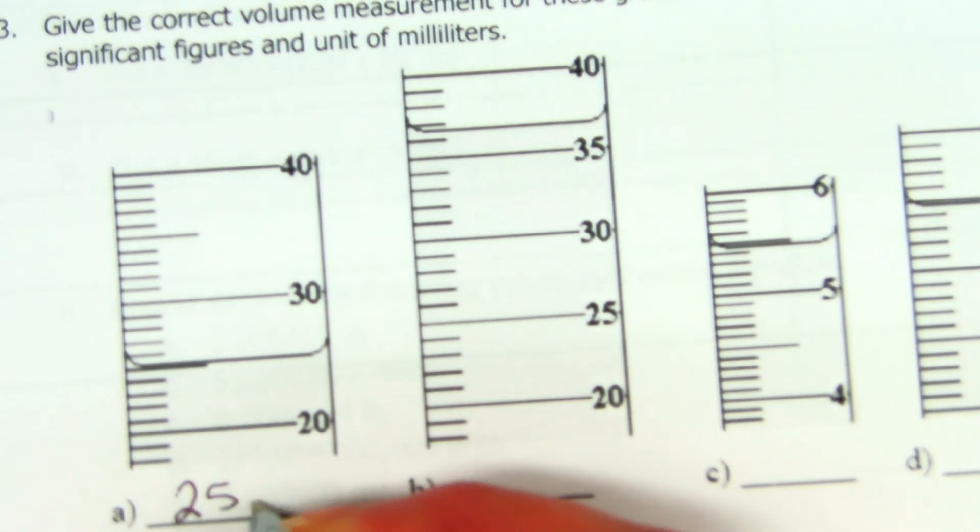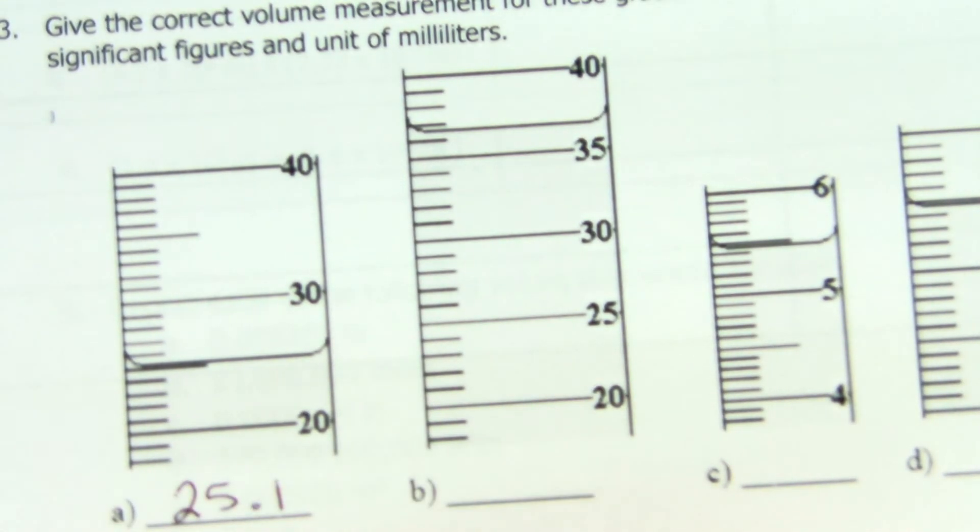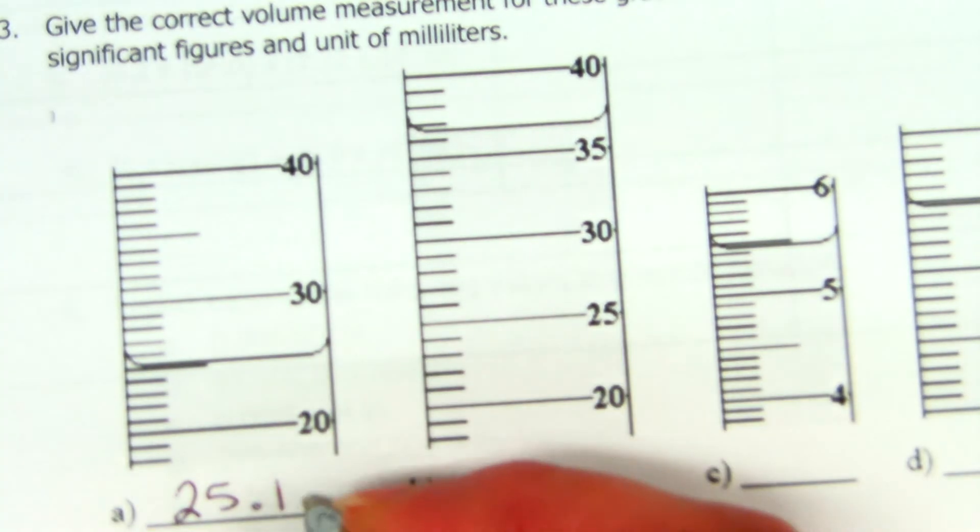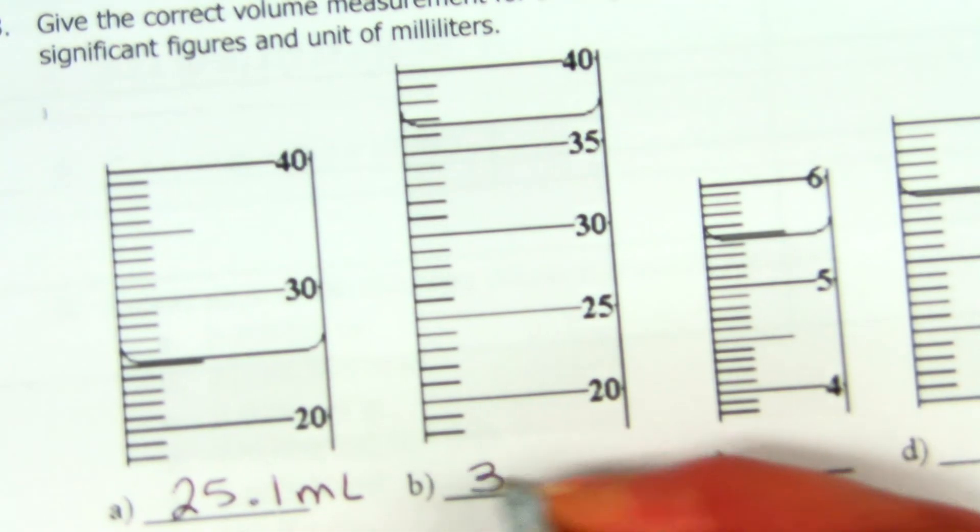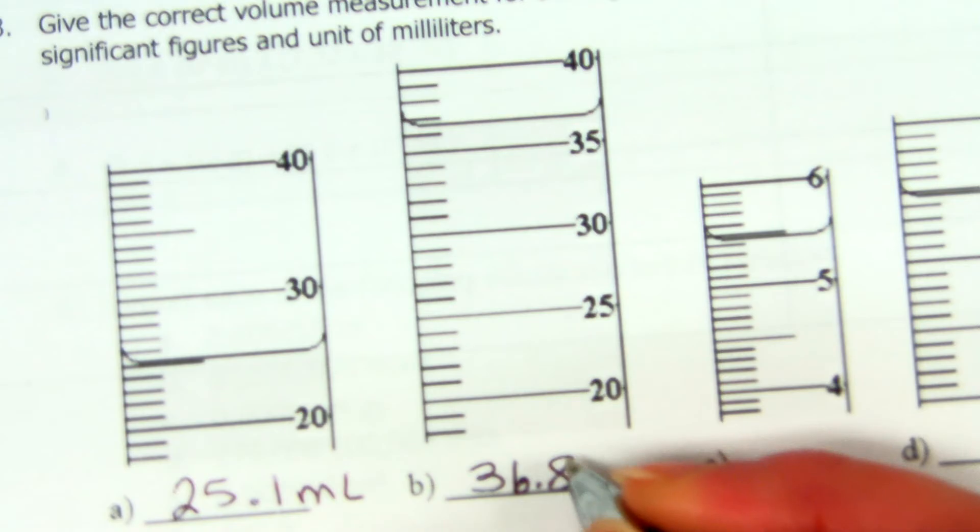How about the next one to you, Christian? 36.8 what? Milliliters. Riley? How would you read C?